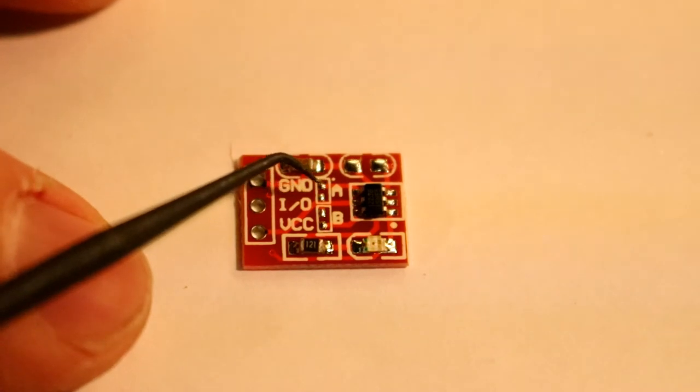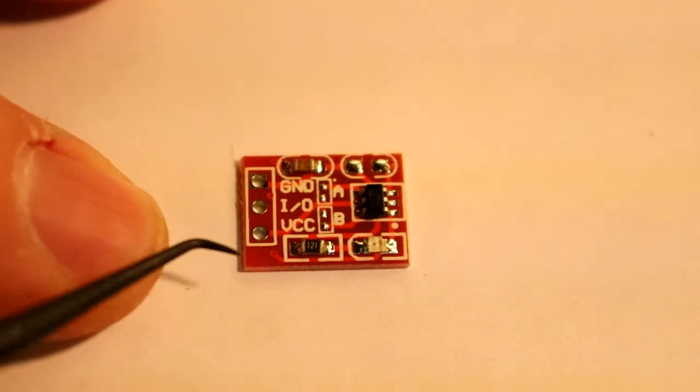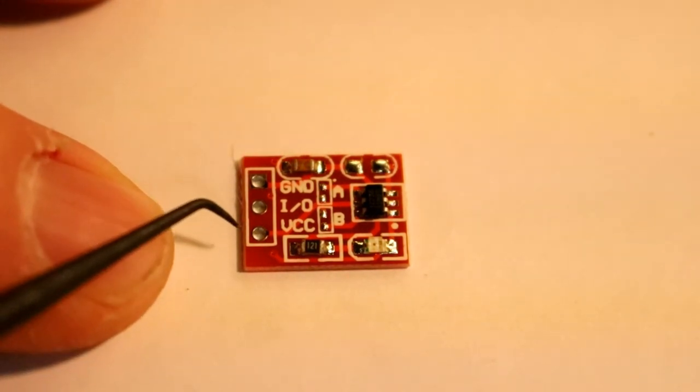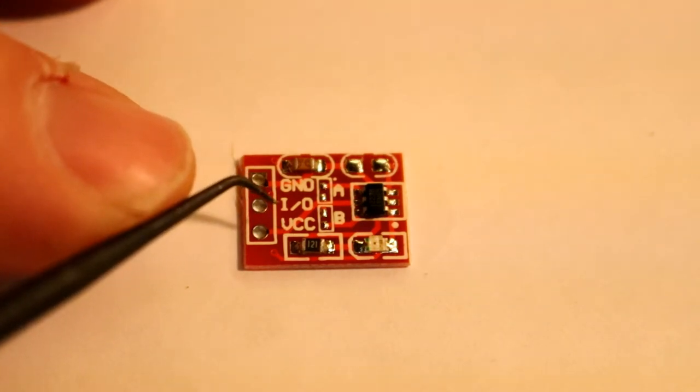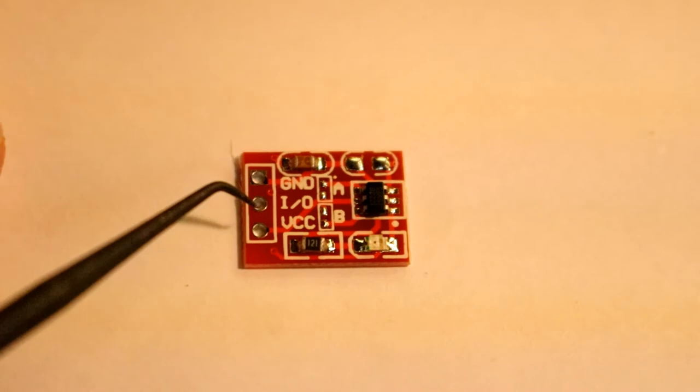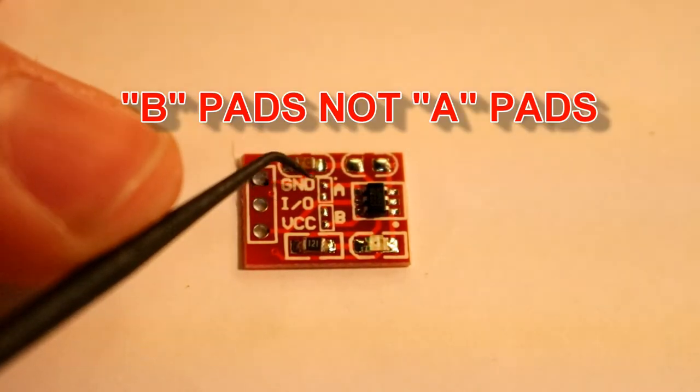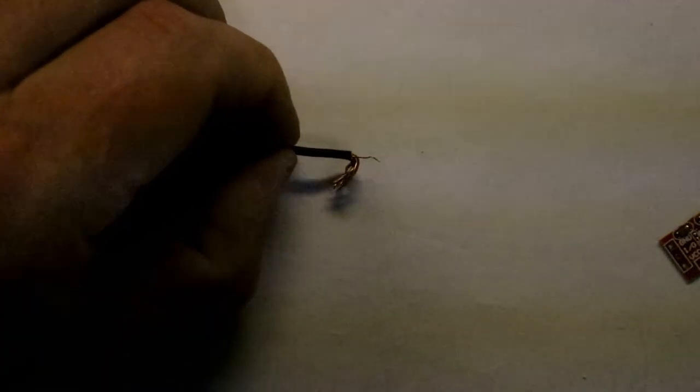If I bridge these two pads, we're going to be shorting these two out. This A pad sets the default output as being either high or low. Default out of the packet is momentary. When we get close to the touchpad the output goes high, and when we move away it goes low. If we bridge these two solder pads right here, it'll set the output type to being latched.